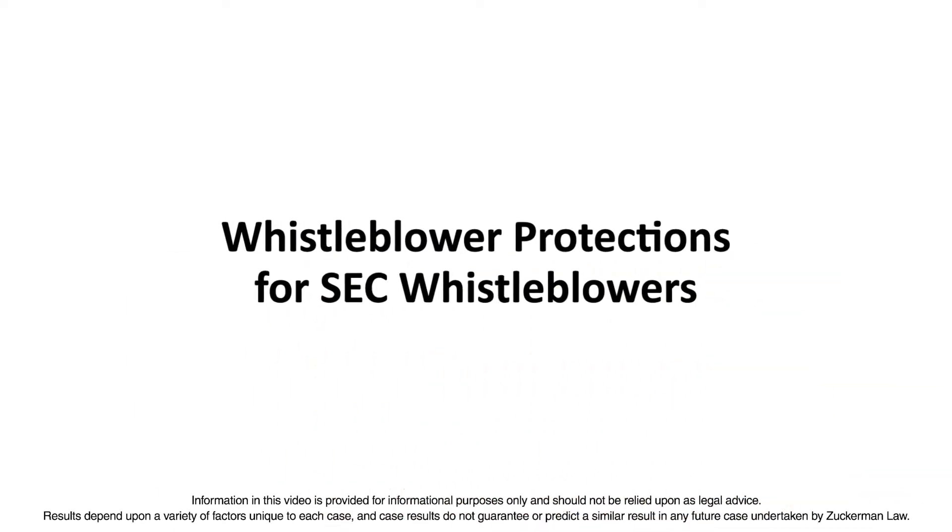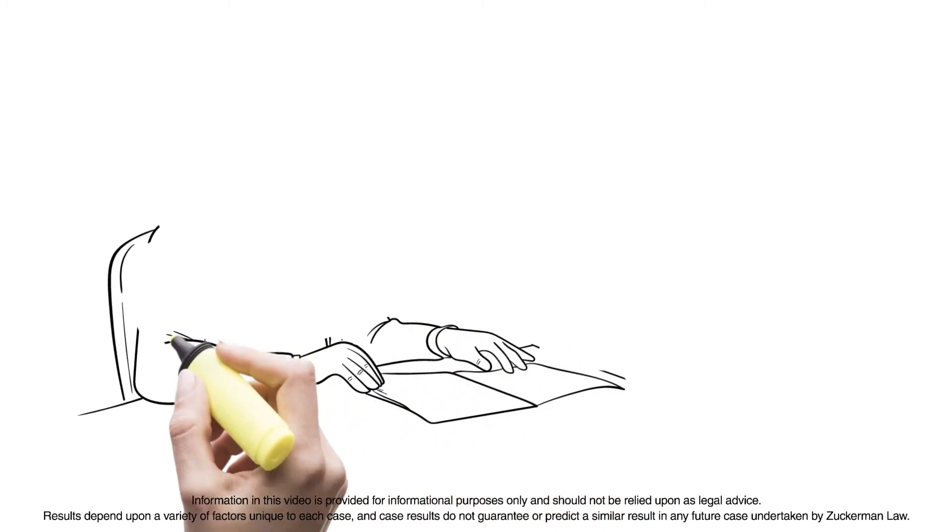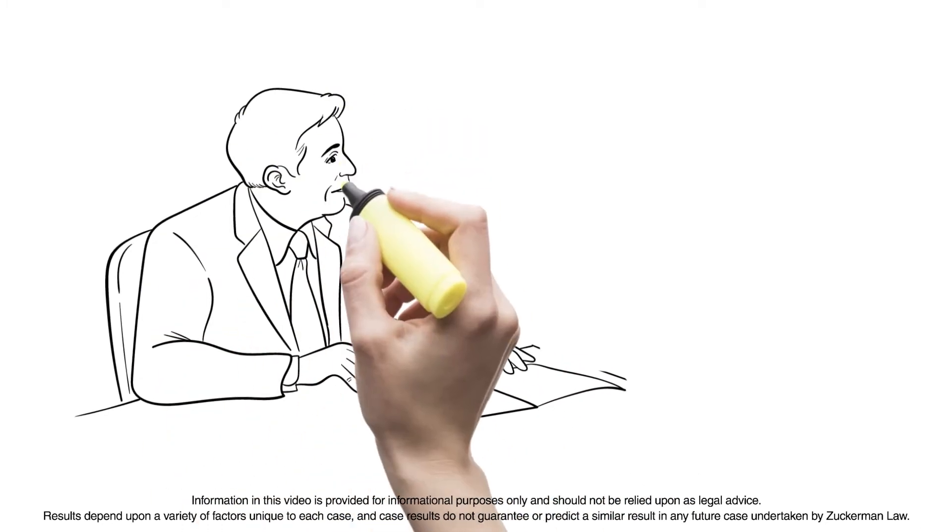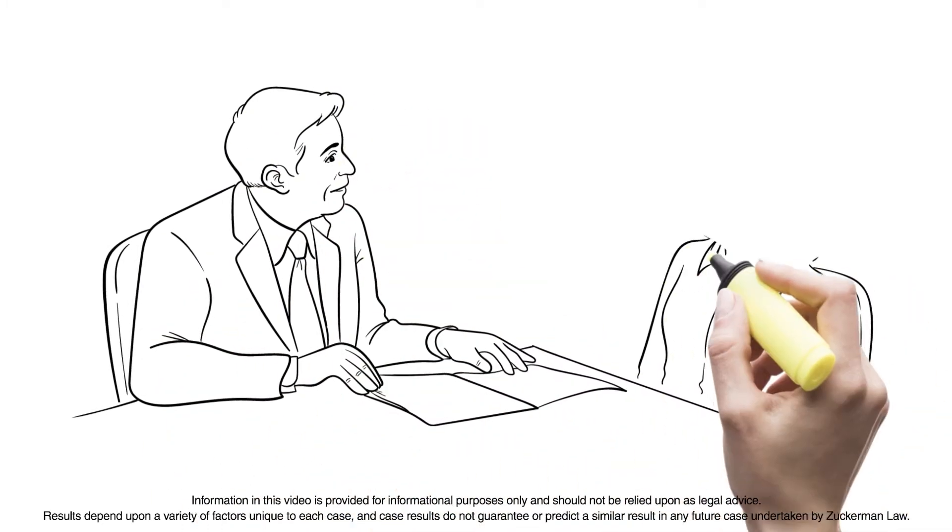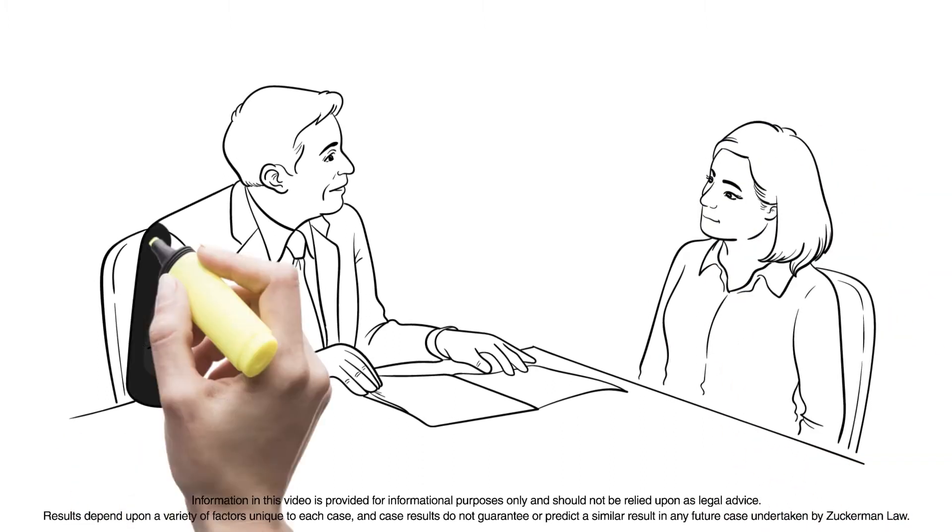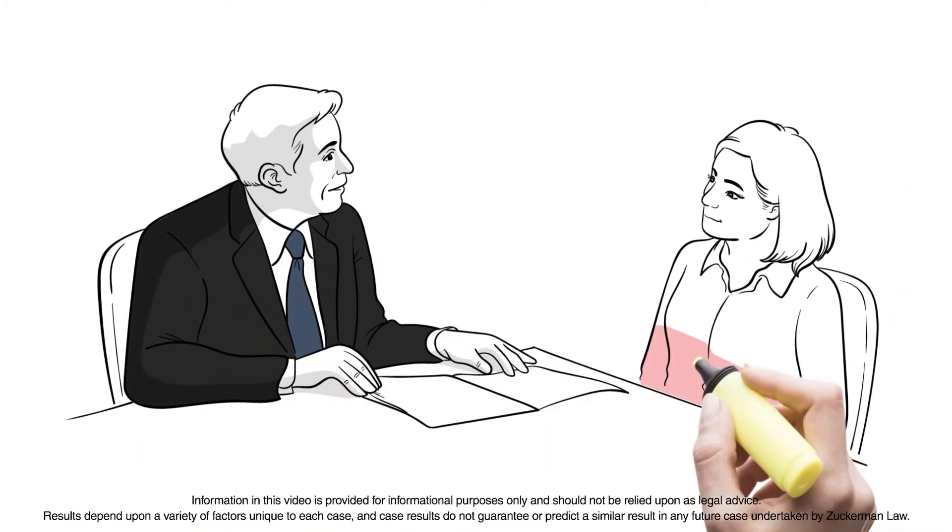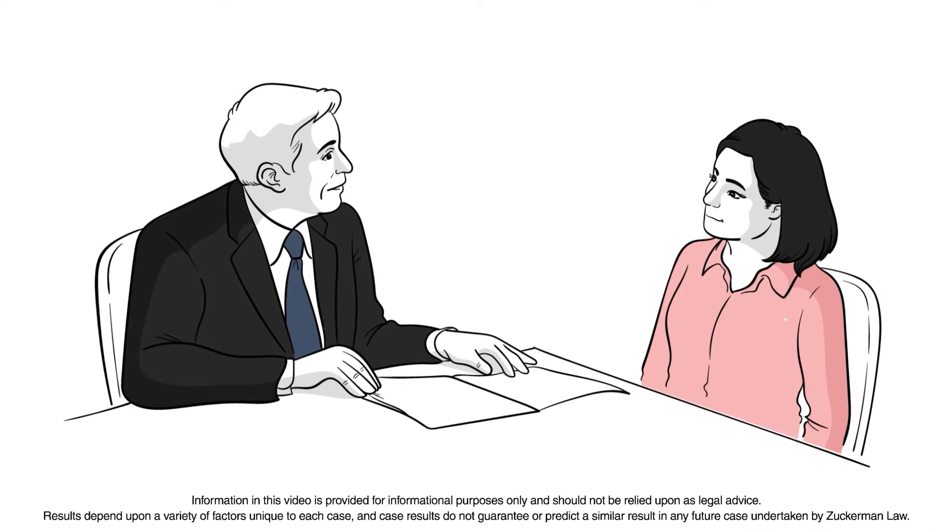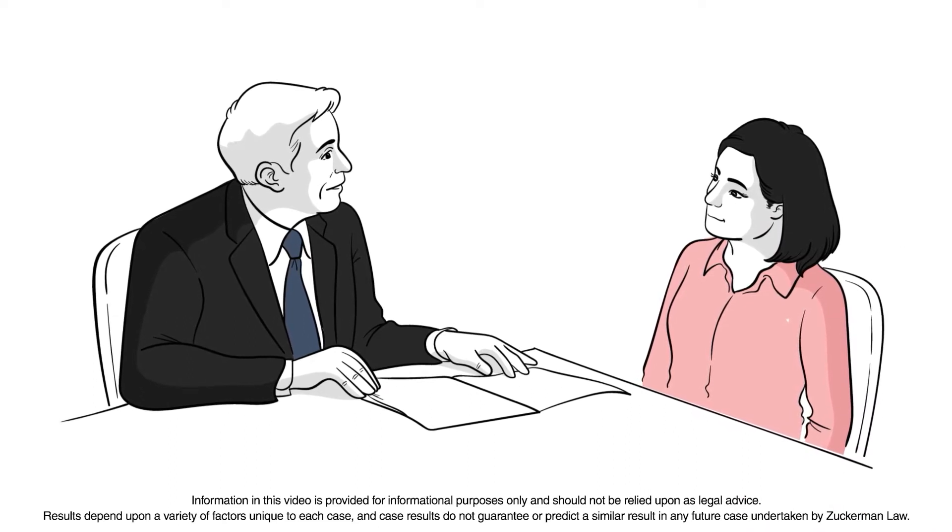Whistleblower protections for SEC whistleblowers. The SEC whistleblower program has been effective in combating fraud and protecting investors. Whistleblower tips have enabled the SEC to recover more than $2.5 billion, and the SEC has paid whistleblowers more than $500 million in awards.